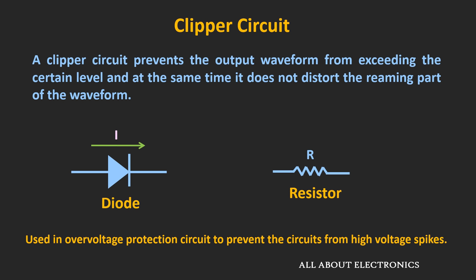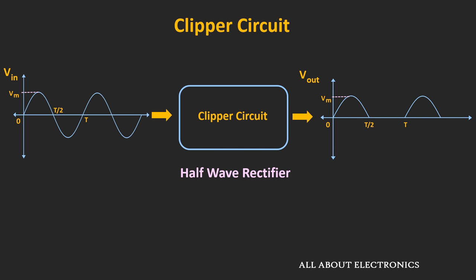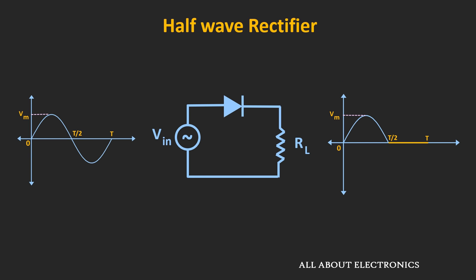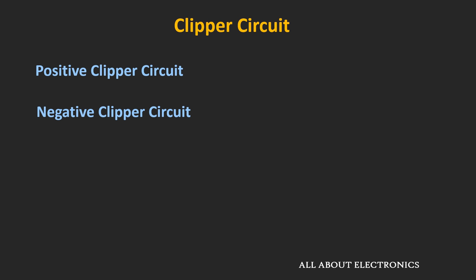These circuits can be designed just by using a diode and resistors. The simplest form of Clipper Circuit is the half-wave rectifier, which can be designed just by using a diode and a resistor. Whenever the AC signal is applied to the half-wave rectifier, it passes the positive half-cycle and rejects the negative half-cycle. By reversing the direction of the diode, it is possible to pass the negative half-cycle and reject the positive half-cycle. Depending on which portion of the waveform is clipped, the Clipper Circuit can be classified as either a positive or negative Clipper Circuit.